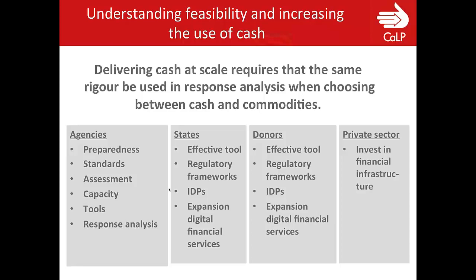For donors, we're calling for supporting cash as a response through the way that they assign funds in emergencies, investing in the development of standards for assessment, challenging organizations delivering commodity-based assistance to meet the same quality standards as cash, and to reduce earmarking — all commitments currently encompassed within the grand bargain. But there's still the need for donors to come forward and make those specific commitments. And finally, for the private sector, it's to invest in financial infrastructure and preparedness.